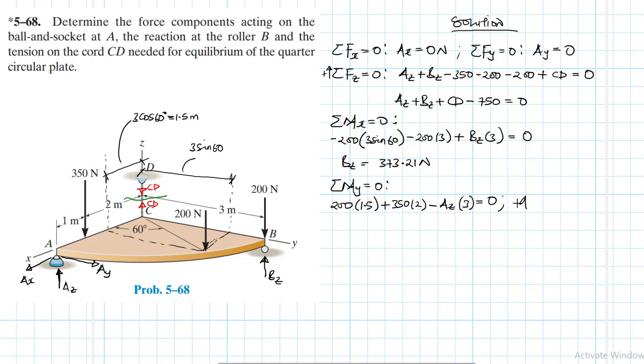Therefore, our AZ is just going to be equal to, we can do the calculation, 200 by 1.5 plus 350 by 2 divided by 3. So this is 333.33 newtons, correct?